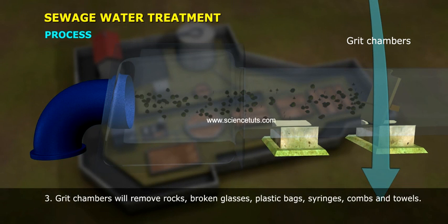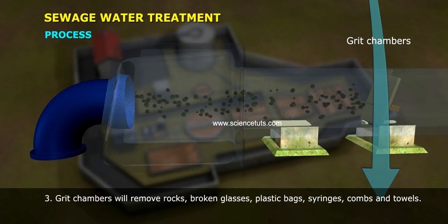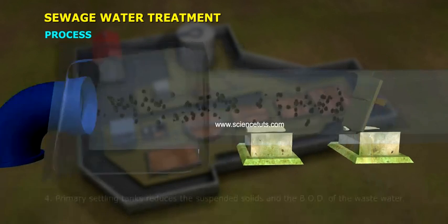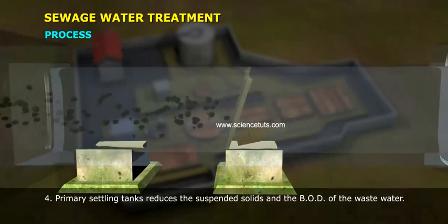Step 3: Grit chambers will remove rocks, broken glasses, plastic bags, syringes, combs, and towels.